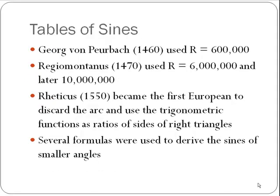In Europe, Georg von Pürbach in 1460 used a very large radius of 600,000 — again, probably trying to avoid small fractional parts. And Regiomontanus in 1470 used a radius of 6 million, and later jumped on the base-10 bandwagon and used 10 million for the radius. Regiomontanus, in 1550, became the first European to discard the arc and use trigonometric functions as ratios of sides of right triangles — you might say he was the grandfather of the SOH-CAH-TOA movement that you may have learned in high school.